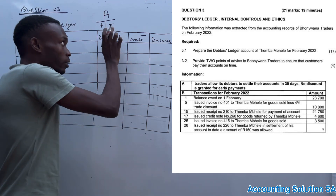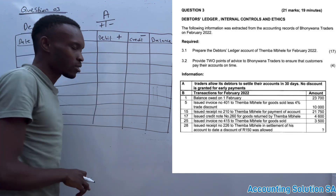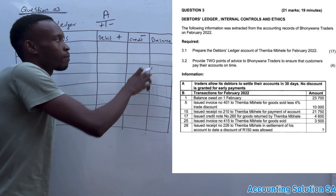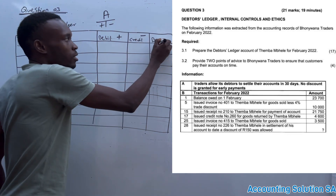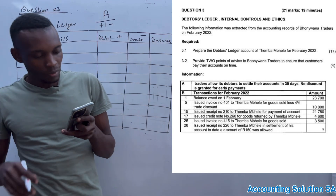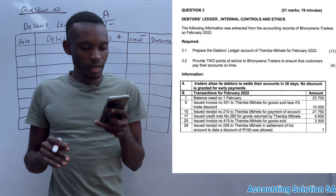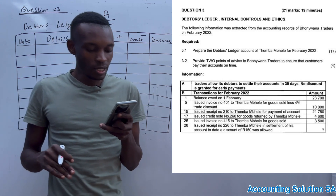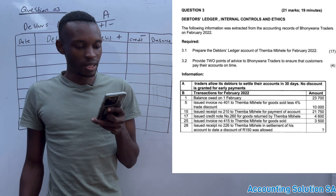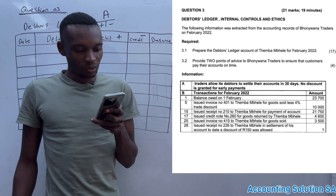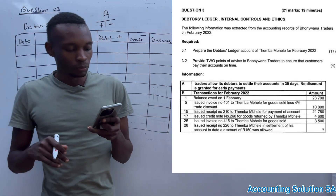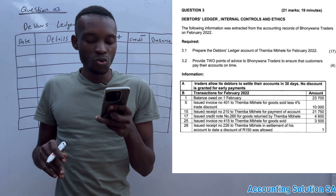If we sell to the customer on credit, the liability is going to increase. If we charge them interest, the liability increases. If we give a discount, it decreases. We balance after each and every transaction. The information states that traders allow debtors to settle their accounts in 30 days, and no discount is granted for any payment.